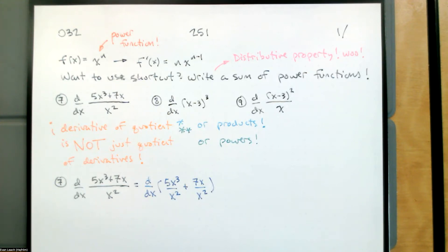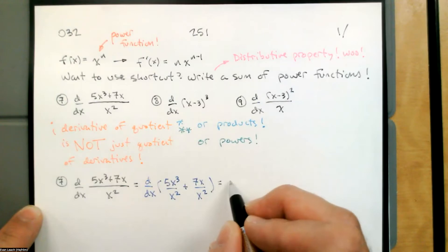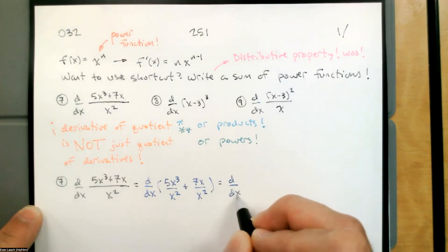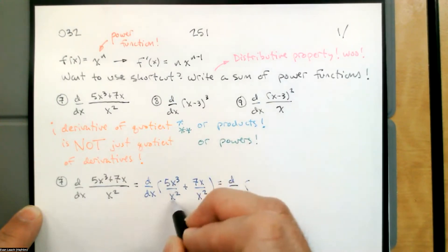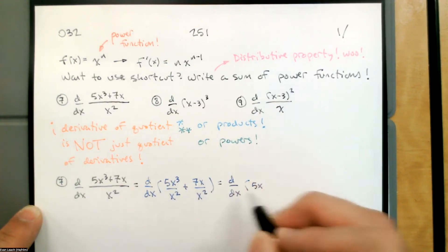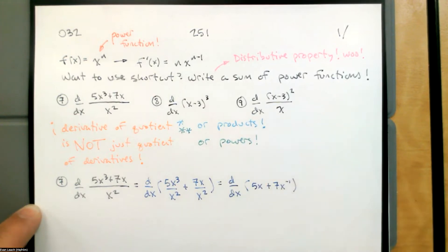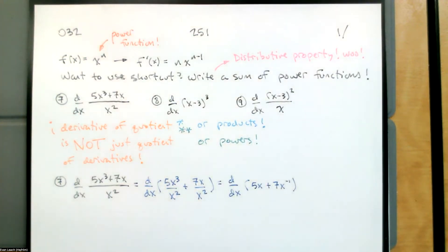Now I can write two terms as power functions. Notice I still have the derivative because all I'm doing is some algebraic sleight of hand. 5x cubed over x squared is 5x. 7x divided by x squared is 7x to the negative 1. So we use the distributive property, then we simplify. Now we have a sum of power functions.